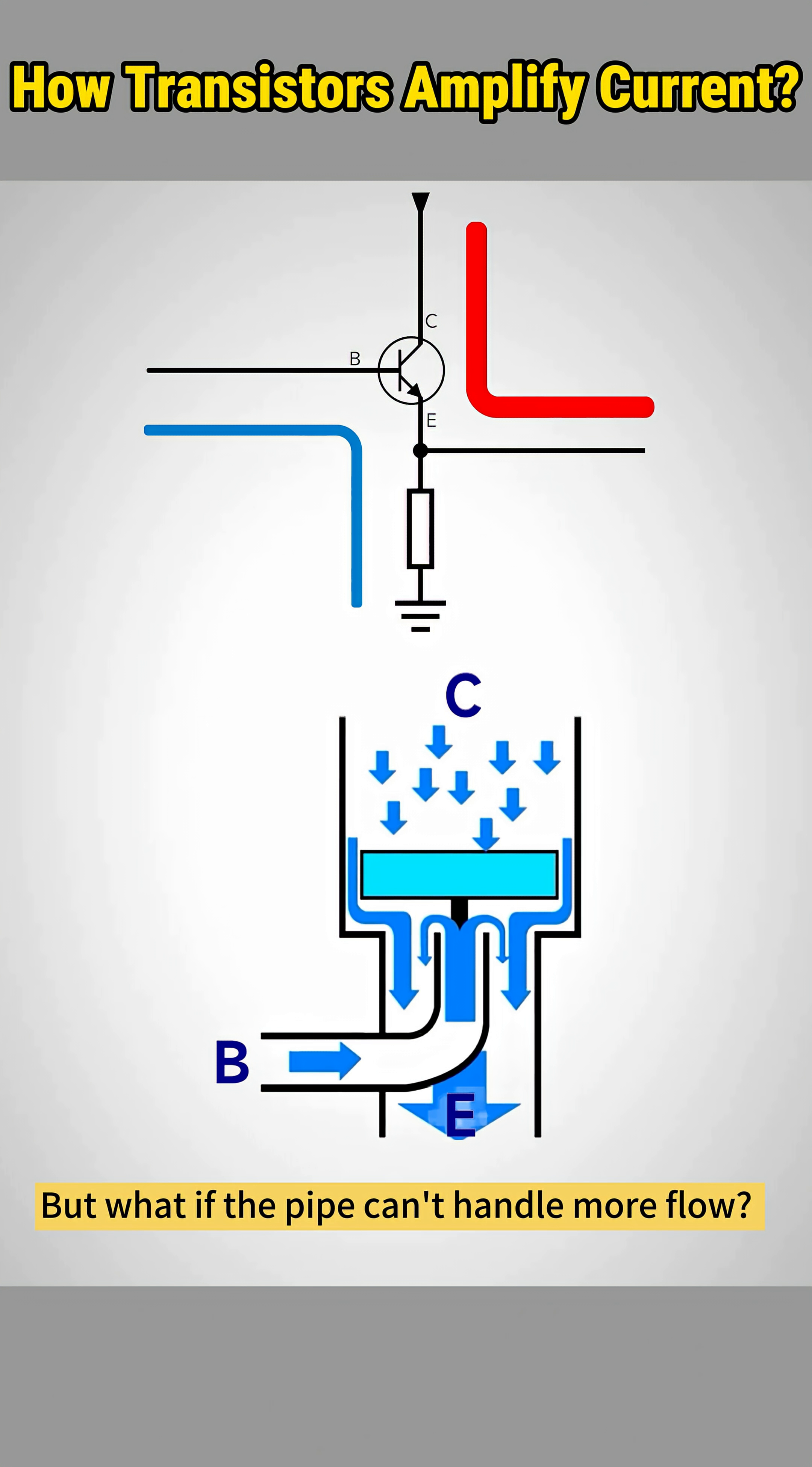But what if the pipe can't handle more flow? That's saturation. When increasing base current stops boosting collector-emitter current, the transistor is fully on and has reached its maximum conduction capacity.